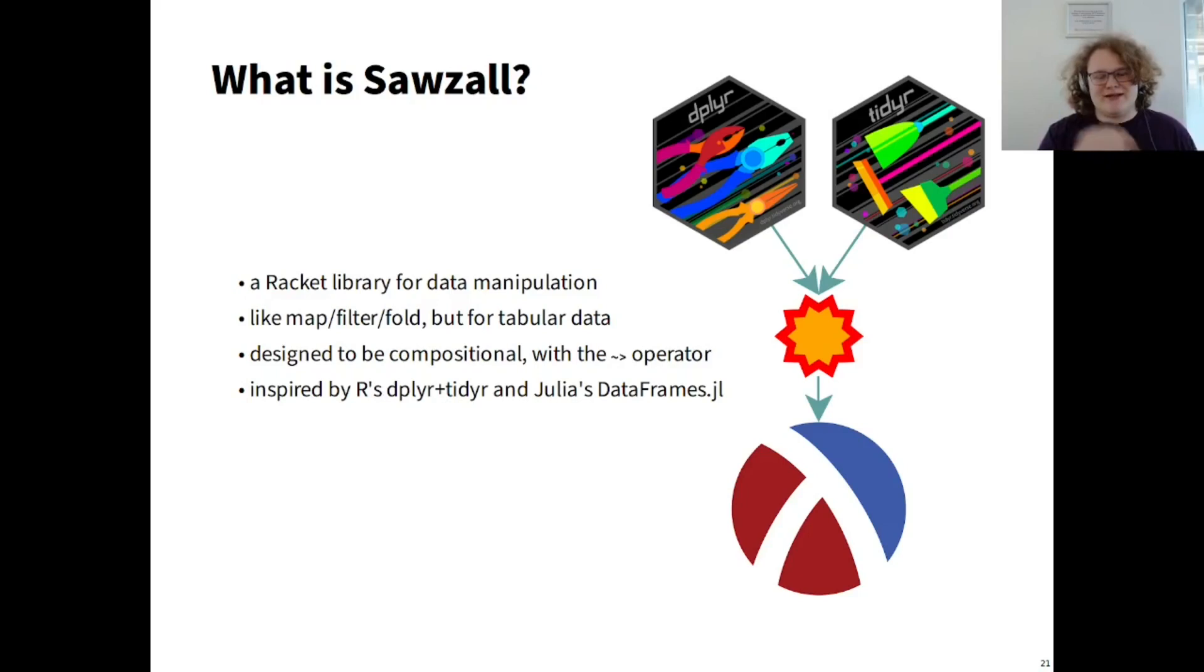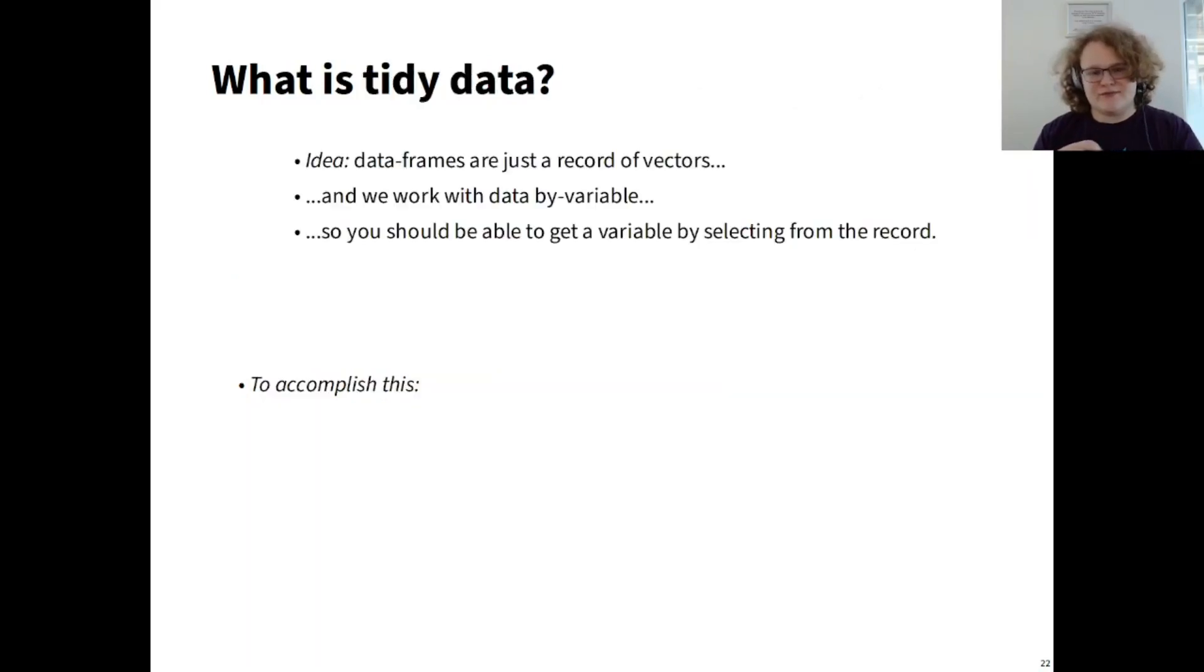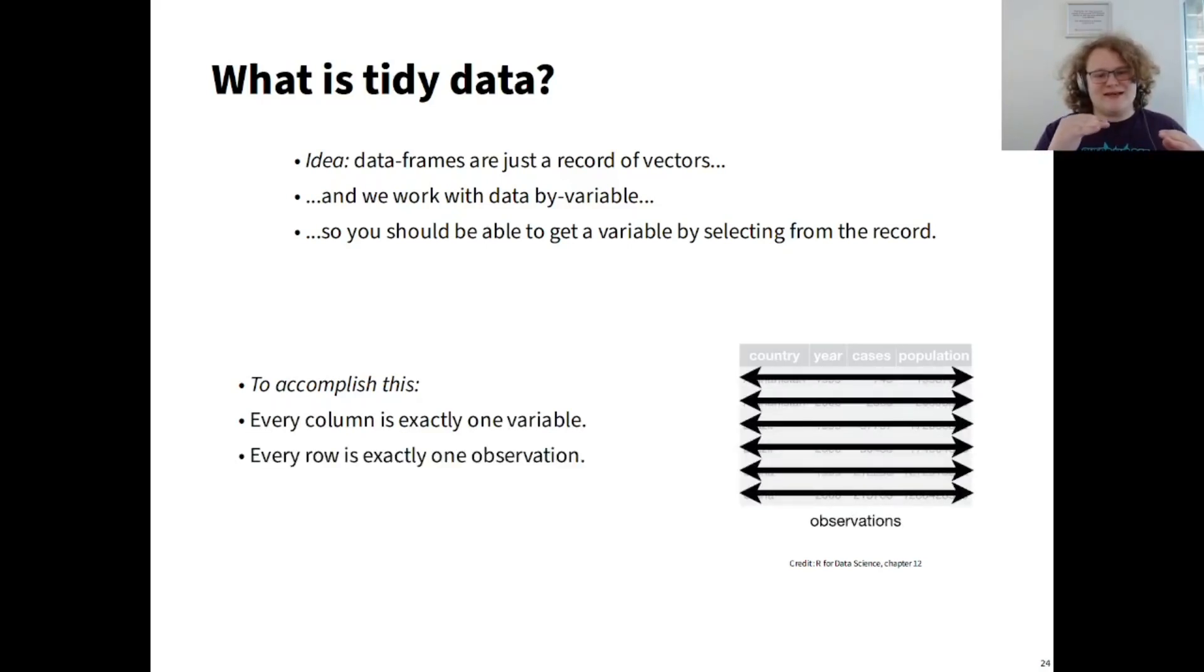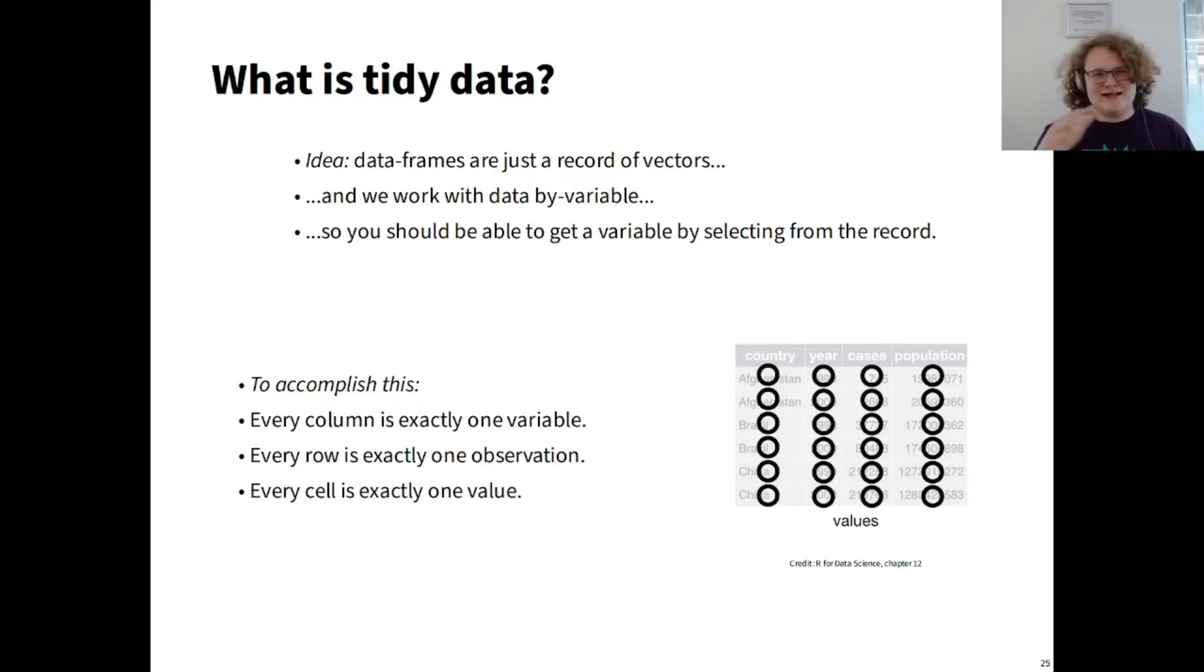Sozzl is a Racket library for data manipulation, like map, filter, and fold, but for tabular data. It is heavily inspired by the Tidyverse libraries, dplyr and tidyr. So, what is tidy data? The idea is that data frames are just a record of vectors, and we work with data by variable, so you should be able to get a variable by selecting from the record. To accomplish this, every column in a data frame must be exactly one variable, every row in the data frame must be exactly one observation, and every cell in the data frame must be exactly one value. This gives Sozzl and Graphite a consistent philosophy to read data about and reason about for the sake of abstraction.